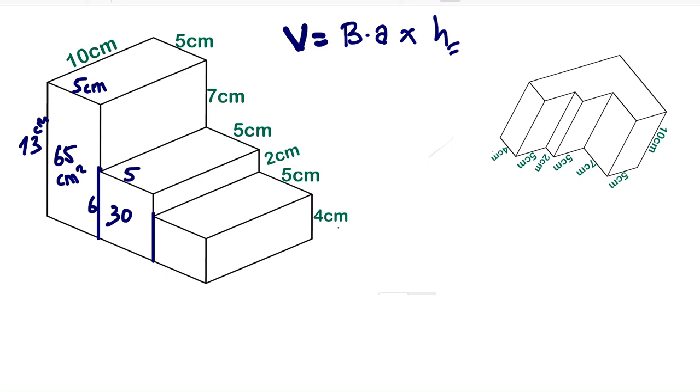Now the last part is this section. To get the area of this section, we can see that here is 5 centimeters. And this other section is 4 centimeters. So the area 5 times 4 is 20.